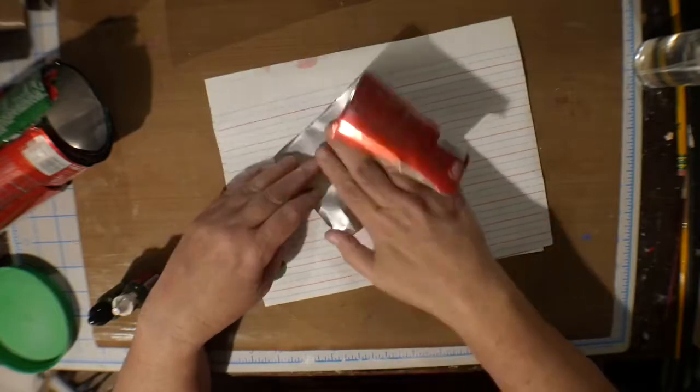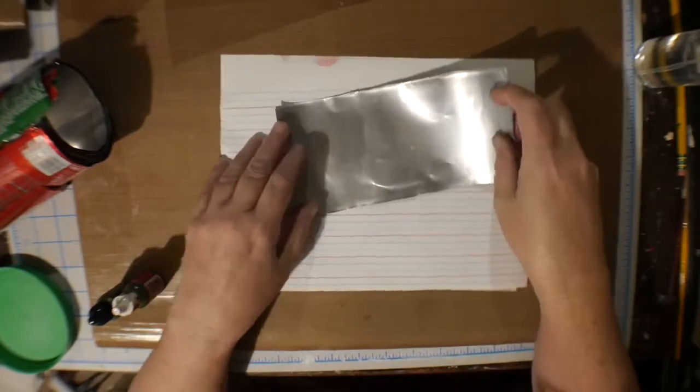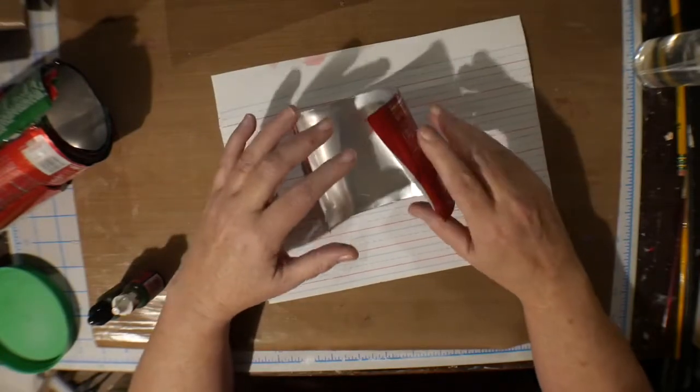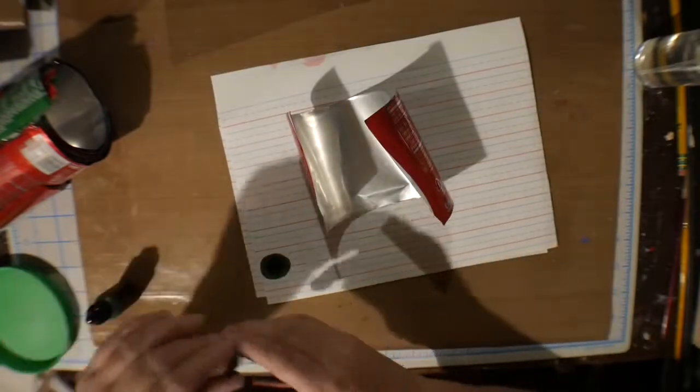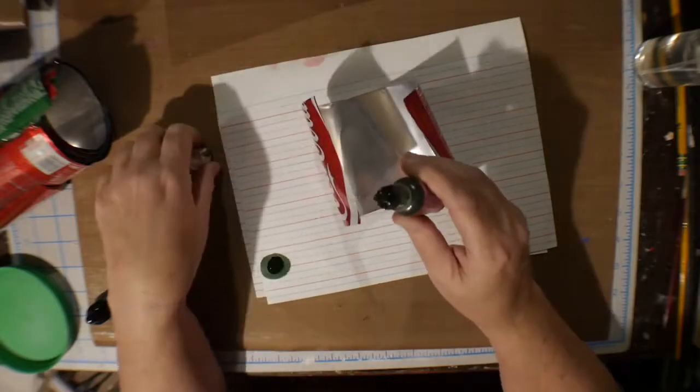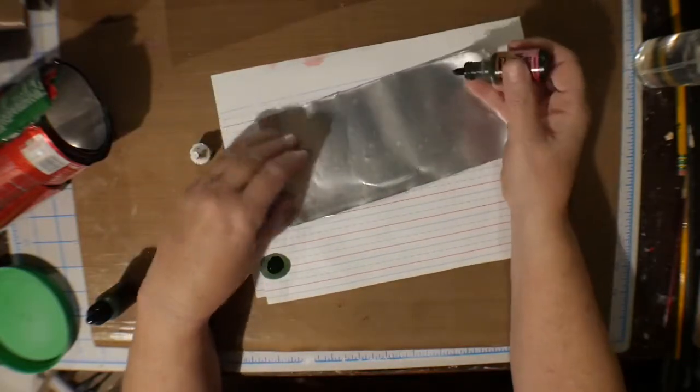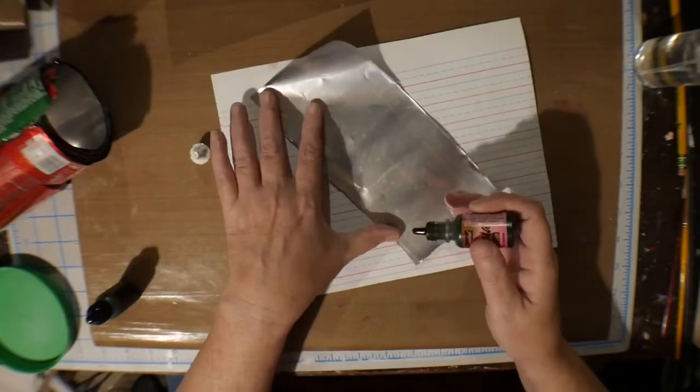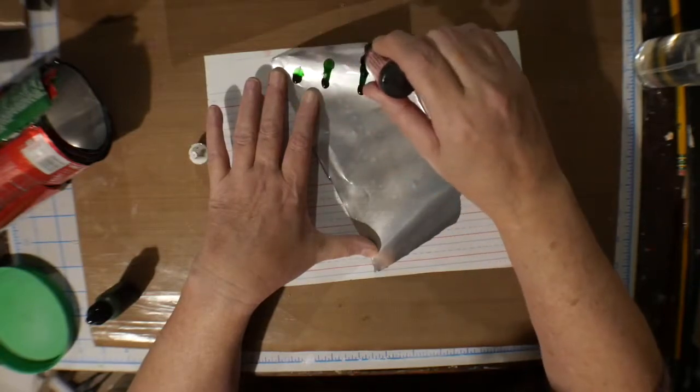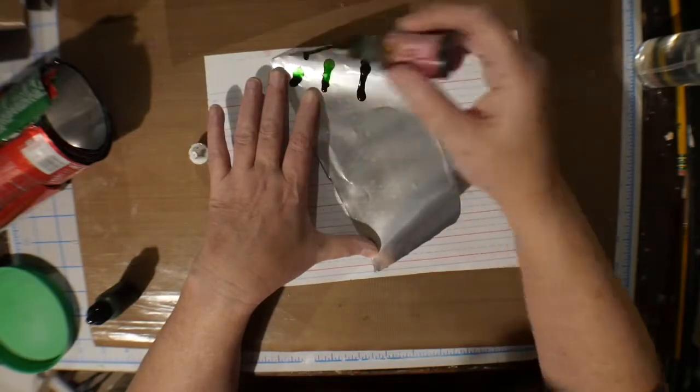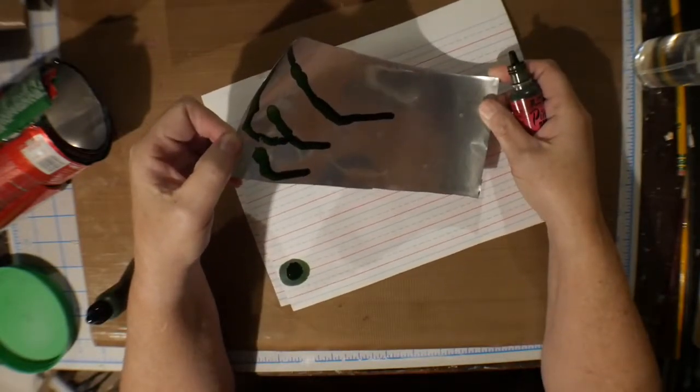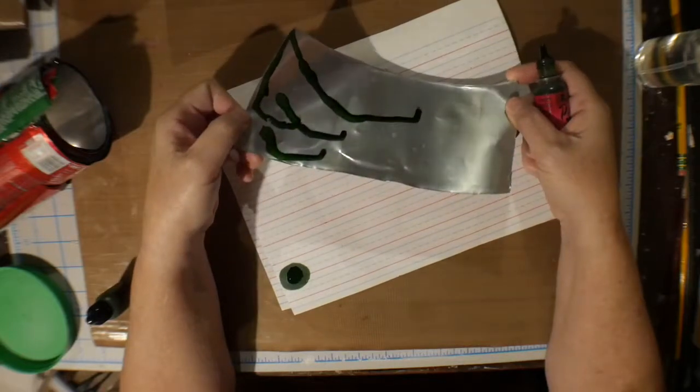What I'm going to do is use alcohol inks to color the sides here. This is lime green. I'm going to start with this one. It's a lighter color. Now, alcohol inks dry pretty fast. You want to spread them as much as you can. I could use a dauber to get this done, but I want to try it this way.